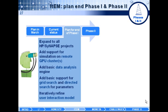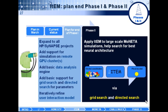The plan for the end of phase one is to expand ITEM to all the other projects, add support for remote GPU clusters, add basic data analysis tools, add basic support for grid search and directed search to find better parameters, and iteratively refine the user interaction model. The final goal of ITEM for phase two is to apply it to Moneta and help find the best neural architecture to subserve the animat brain.